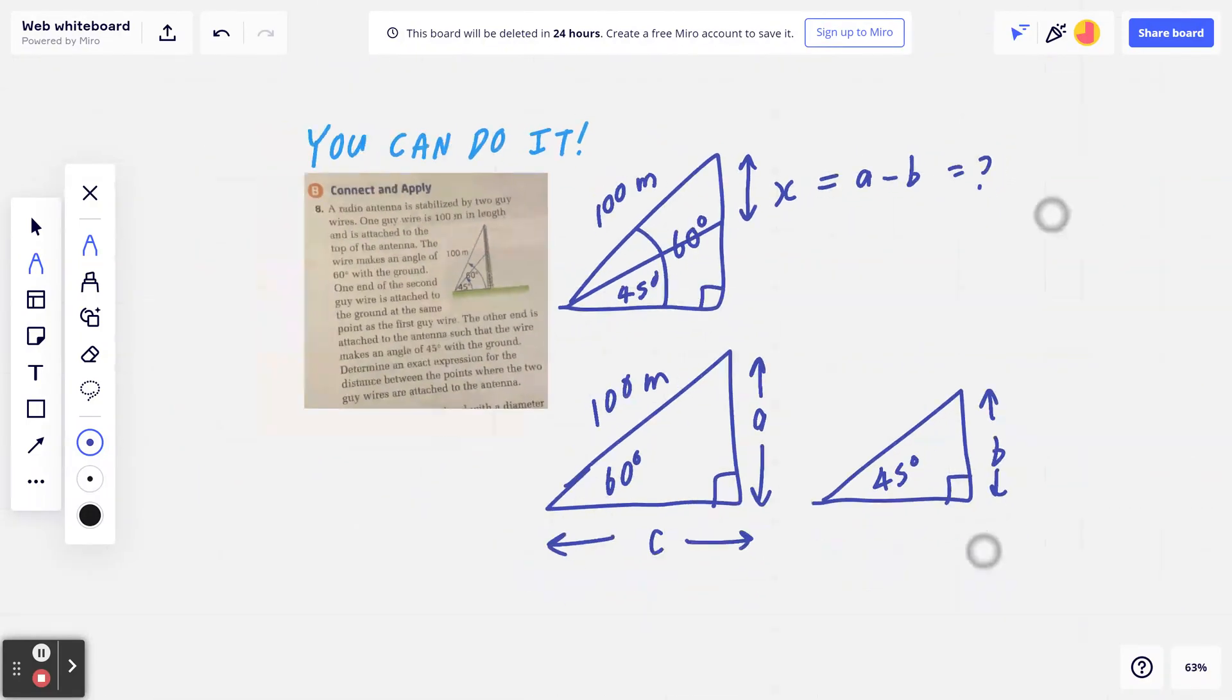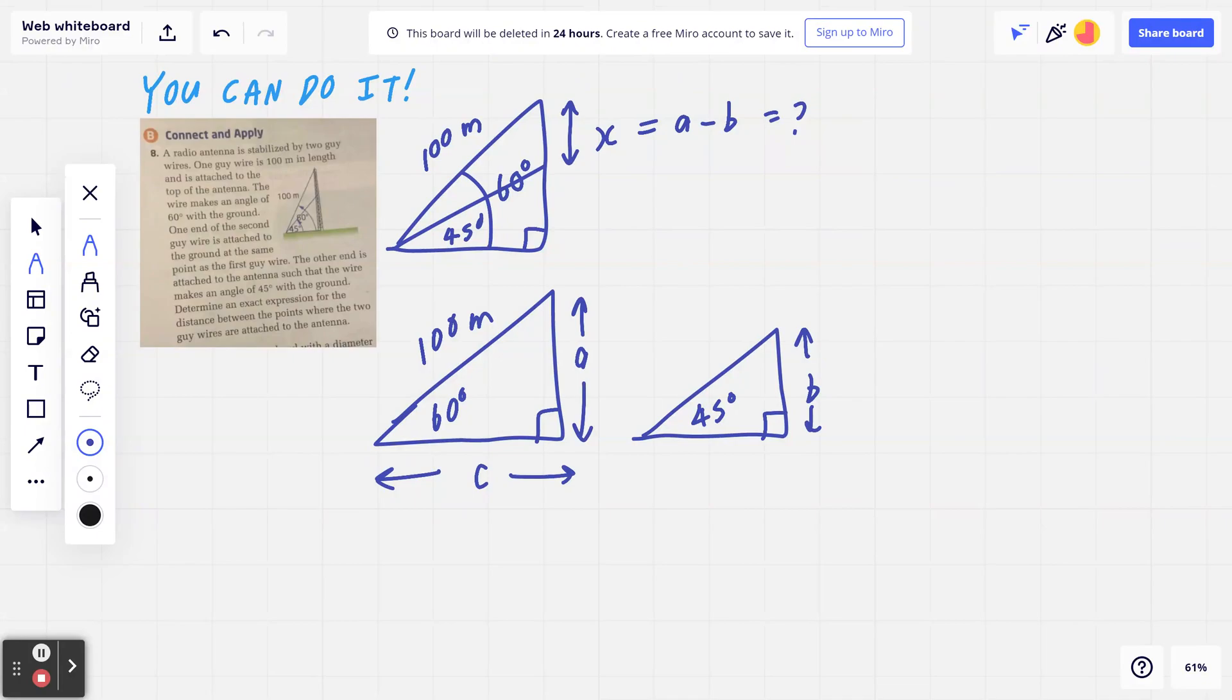Now let's go back. Let's start with a. If you think about opposite over hypotenuse, that's going to be sine. So sine of 60 degrees, it's going to be a divided by 100. So a is going to be 100 sine 60, and I'm going to come back to this. I'm just going to put a box around this right now.